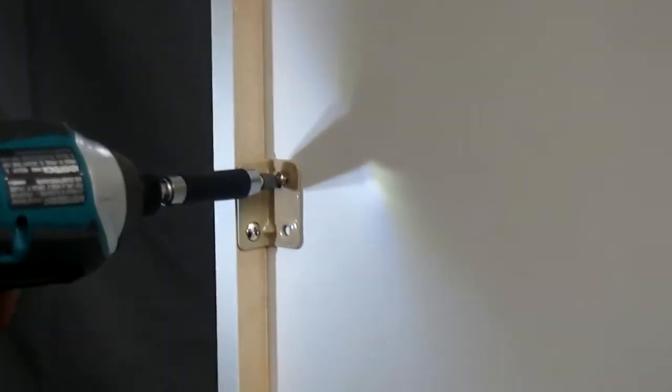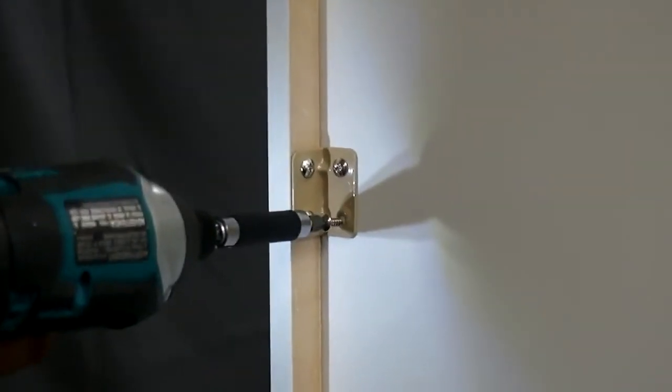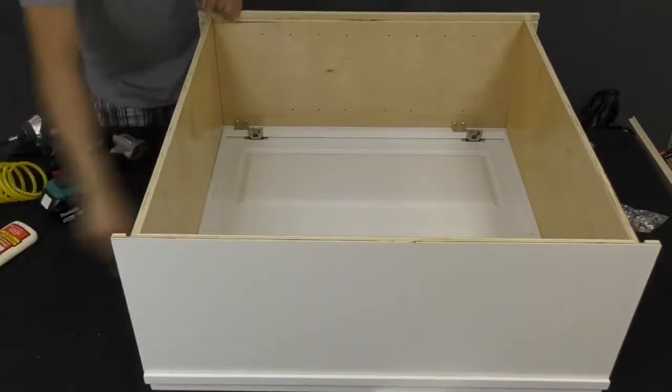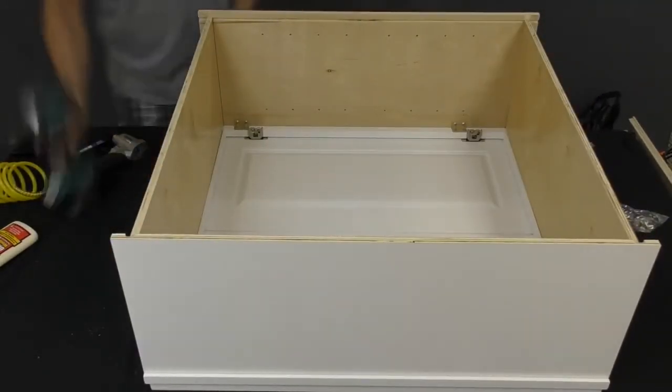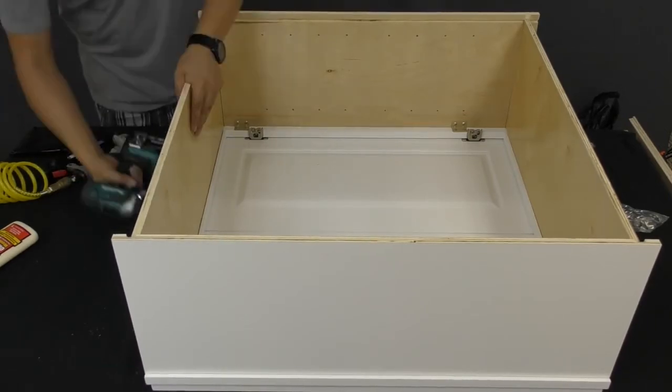The actual positioning of these brackets is not critical. They are just there to hold everything together while the glue dries. Make sure you leave the same side unattached on both the top and the bottom so that you can slide the back panel into place.